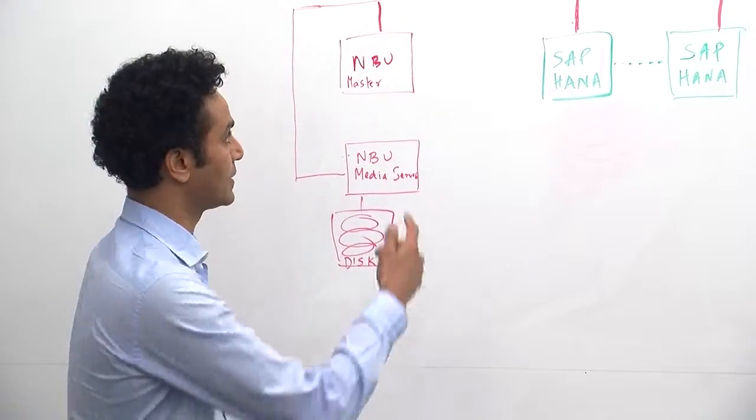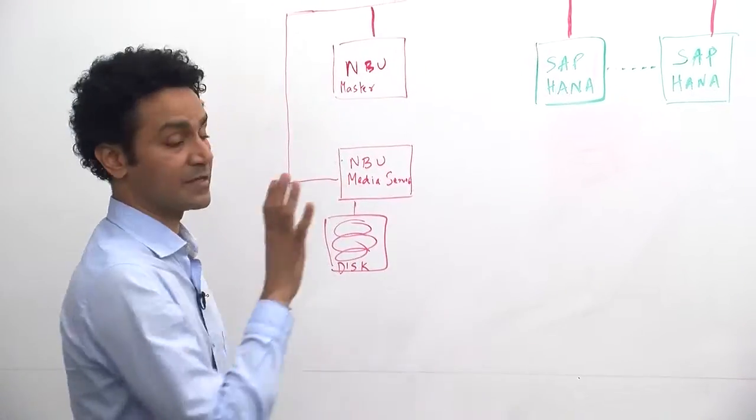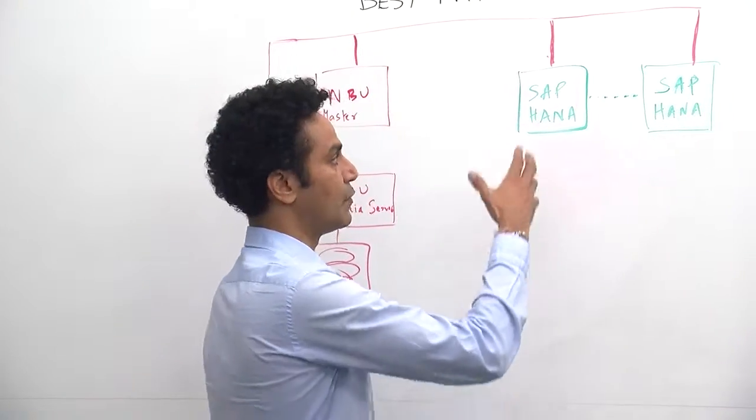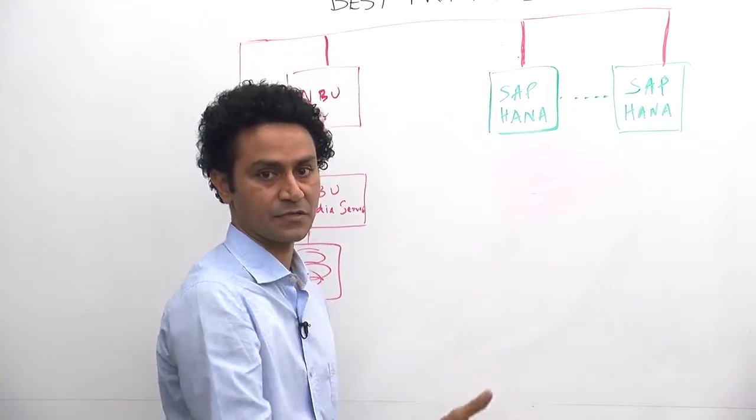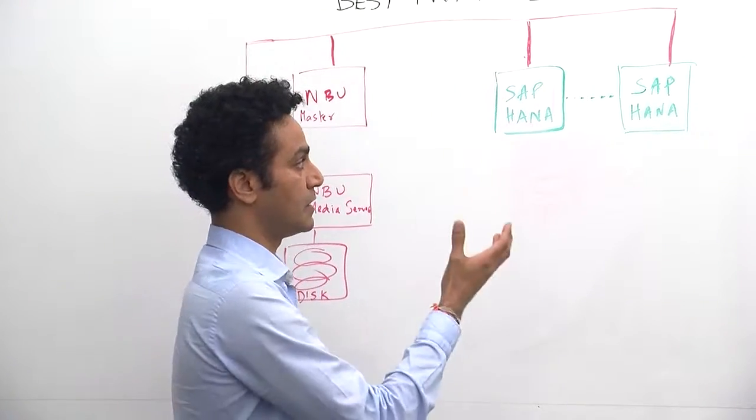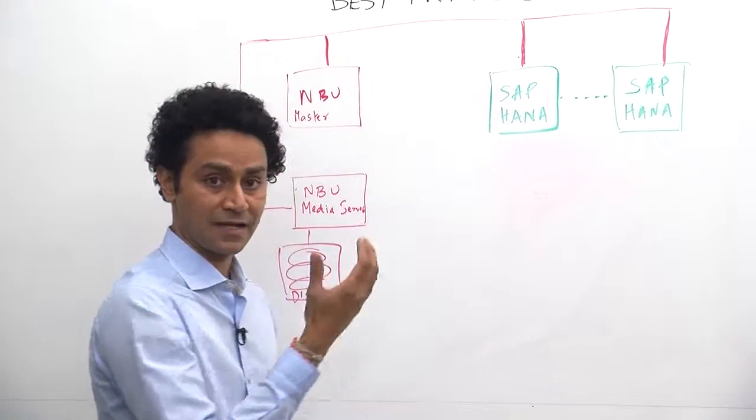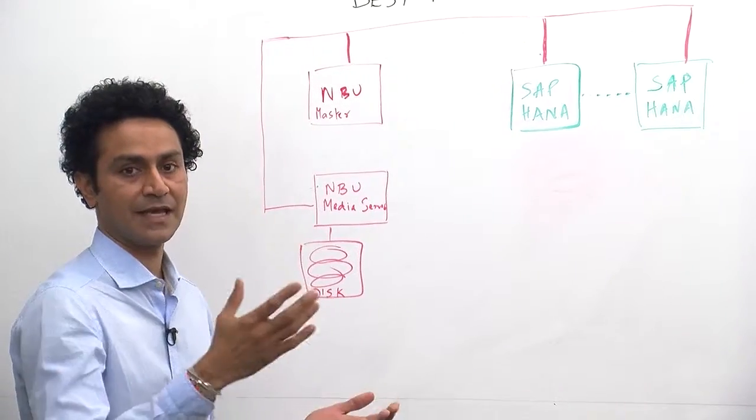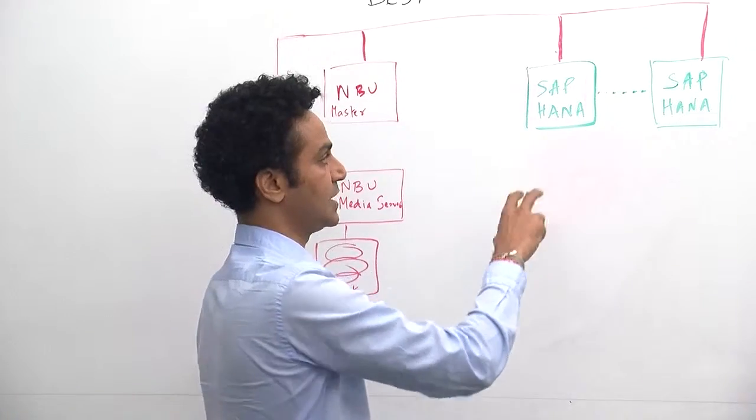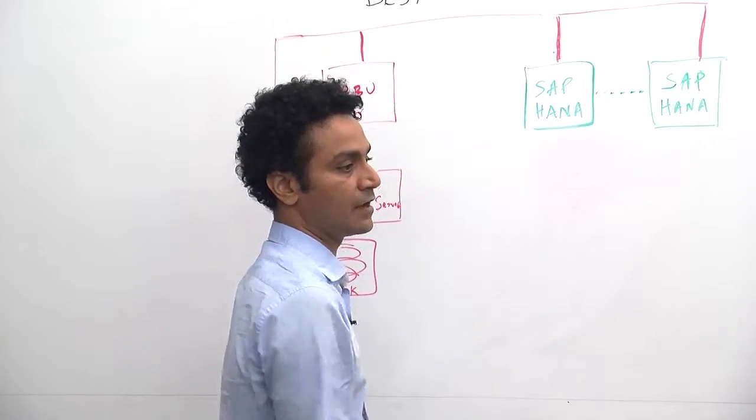When you look at NetBackup for SAP HANA, from an SAP HANA standpoint, you can have a two-node configuration or a single-node configuration or more than one or two nodes as well, depending upon how they configure their SAP HANA configuration. With SAP HANA, you can also buy as an appliance form factor, so they scale as you want to scale your database. In this example, I'm going to take an example of two different nodes in SAP HANA.